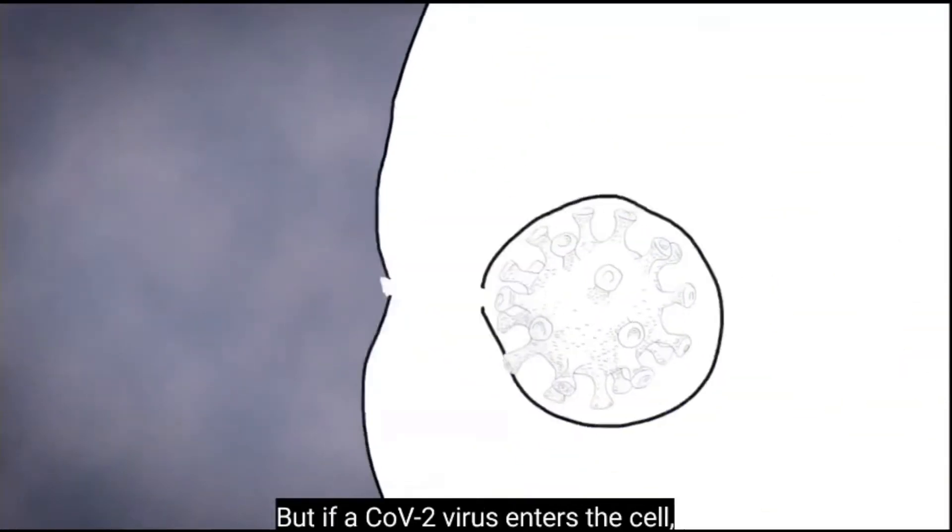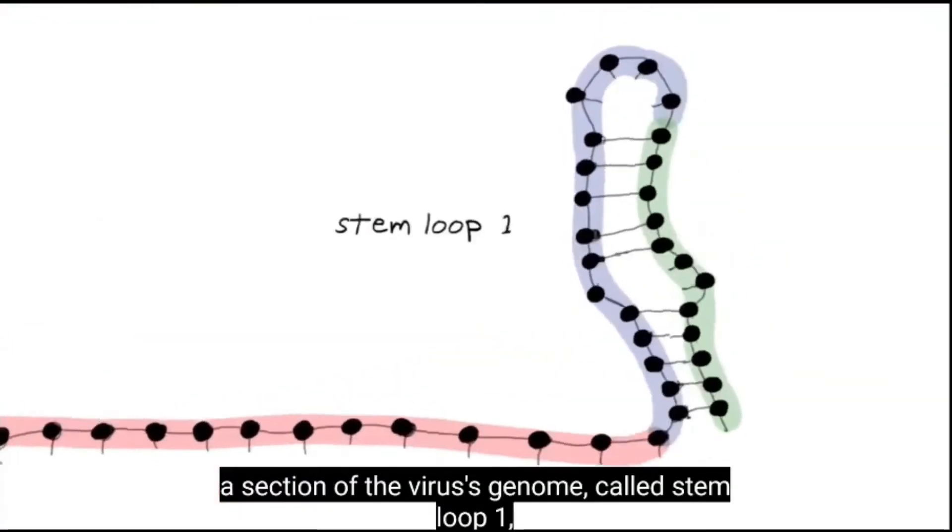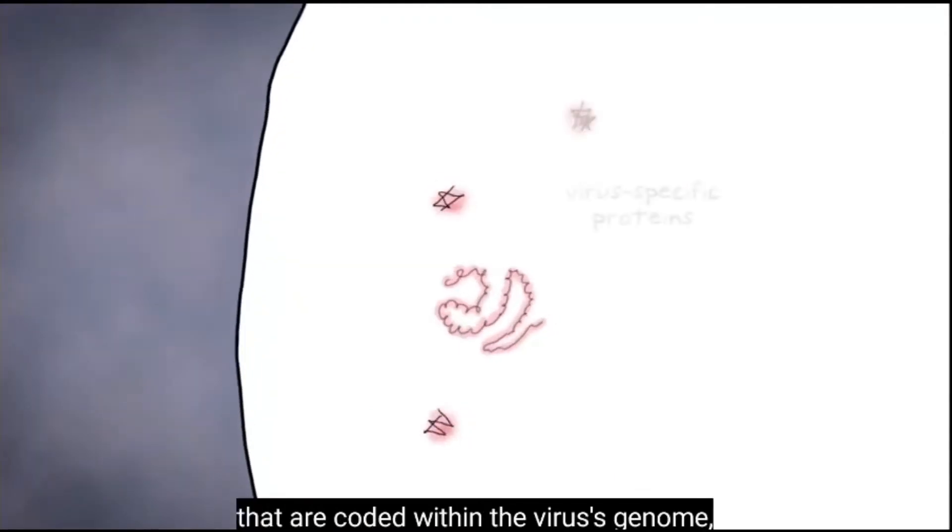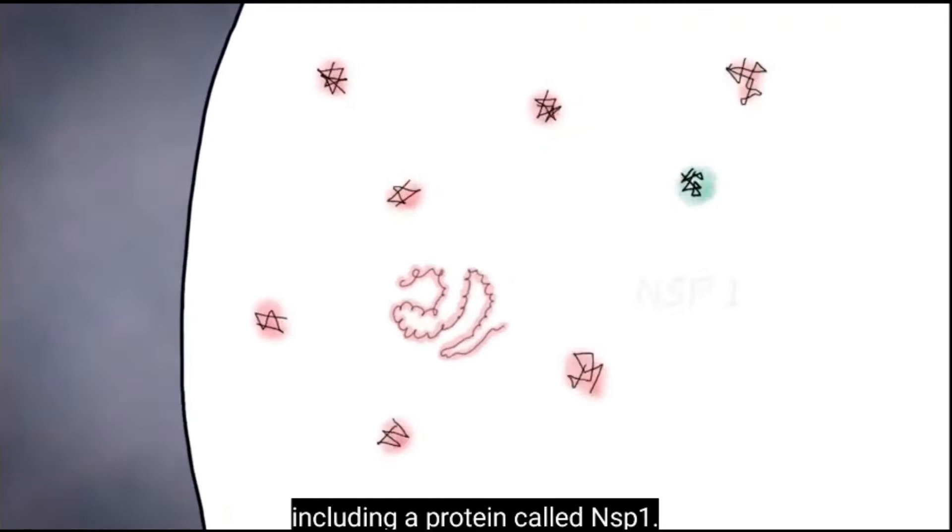But if the CoV-2 virus enters the cell, a section of the virus's genome called StemLuke1 gets the cell to make proteins that are coded within the virus genome, including a protein called NSP1.